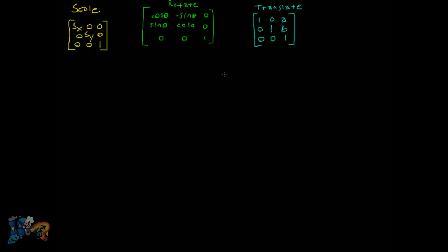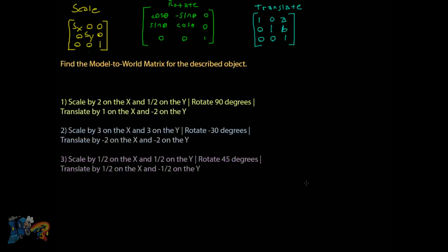If you don't know what these are, make sure you go back. We're going to do three problems here — just find the model-to-world matrix for the described object. In the previous video you saw that I took a single point and underwent some transformations: we scaled it, rotated it, and translated it. But here we're only going to come up with the model-to-world matrix for a whole object.